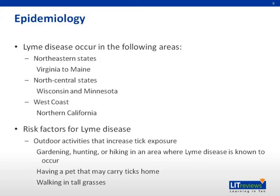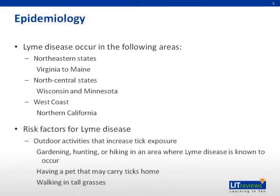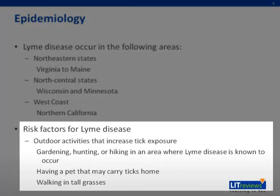Next, we review the epidemiology of Lyme disease. Lyme disease can occur in the following areas in North America: in northeastern states from Virginia to Maine, north central states, and the west coast, principally in northern California. The risk factors for Lyme disease are essentially those activities that increase exposure to tick bites, such as gardening, hunting, or hiking in an area where Lyme disease is known to occur, having a pet that may carry ticks home, or walking through tall grasses where ticks may live.